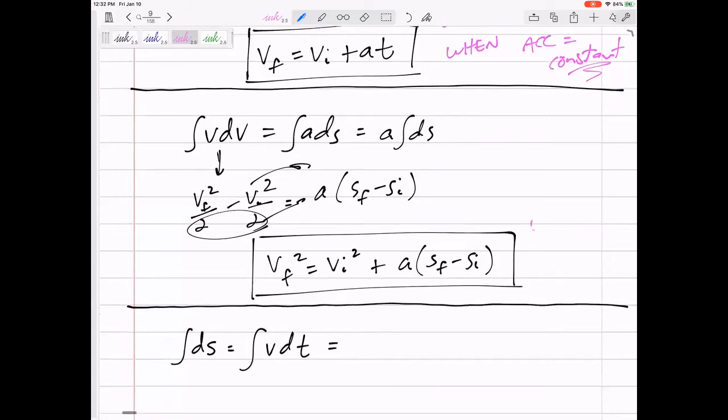Vf squared equals vi squared plus 2a times (sf minus si), the change in position. Y'all have seen that equation before. Use only when acceleration is constant. Yes, we're leaving out the two—it's right in front of me.